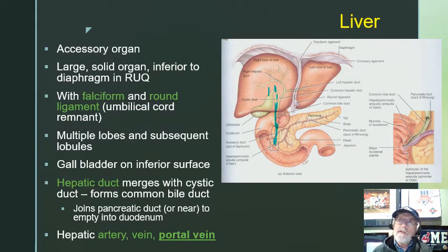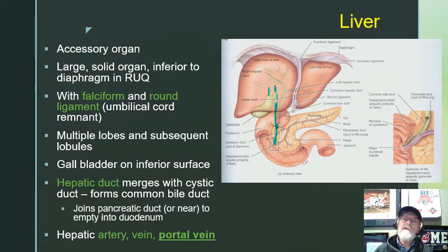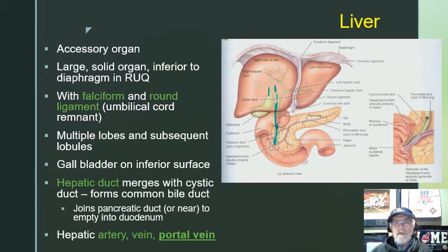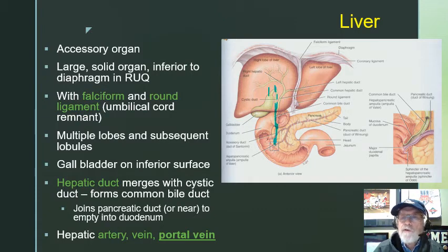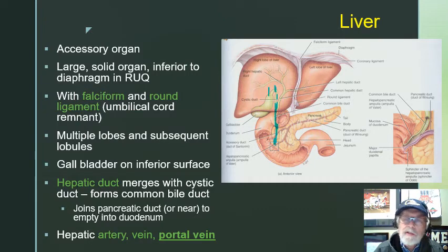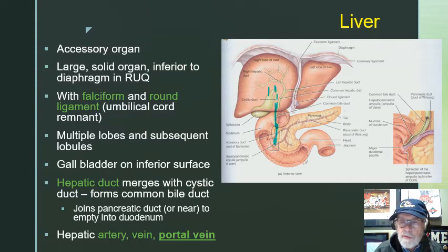One other bad thing about the pancreas is pancreatic carcinoma — cancer of the pancreas. The problem is the pancreas is tucked back in such a way that by the time people get symptoms, it's usually spread and involved the duodenum, the liver, the stomach, the intestines. So pancreatic carcinoma is a really big problem. When somebody has a pancreatic carcinoma, sometimes the surgery is called a Whipple — about eight to ten hours — where they take out part of the stomach, part of the liver, the gallbladder, and as much of the pancreas as they can. Not all pancreatic tumors are amenable to surgical intervention.